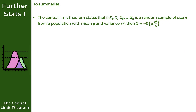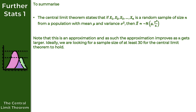To summarise, the central limit theorem states that if x1, x2, x3, and so on up to xn is a random sample of size n from a population with mean mu and variance sigma squared, then x bar, the sample mean, will be approximately normally distributed with parameters mu and sigma squared over n. Note that this is an approximation, and the approximation improves as n gets larger.